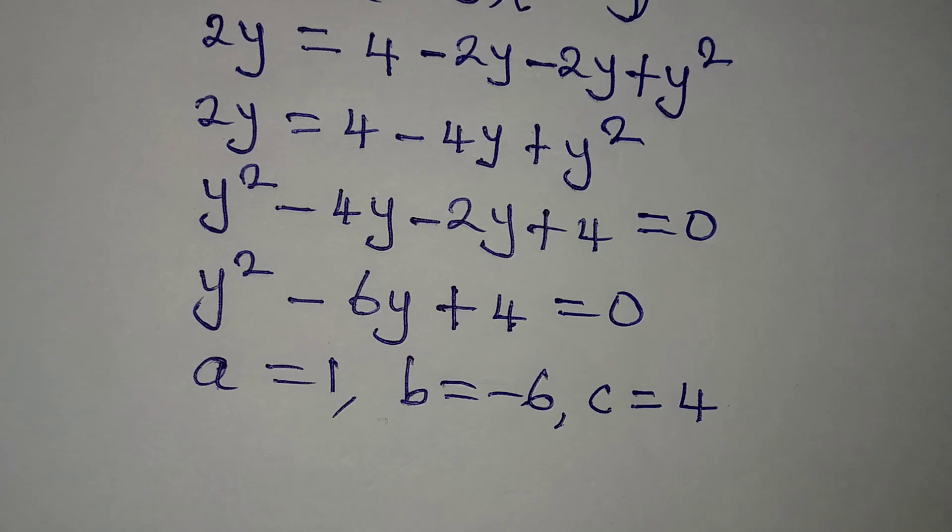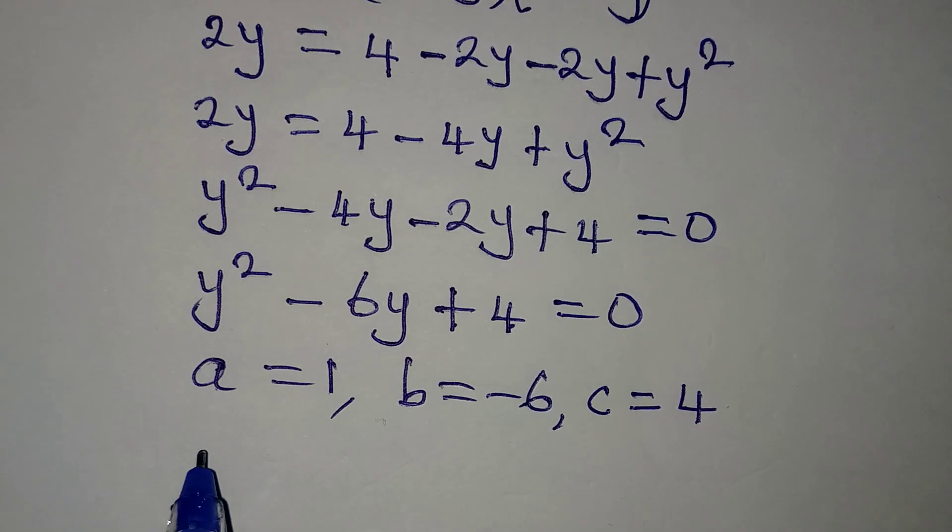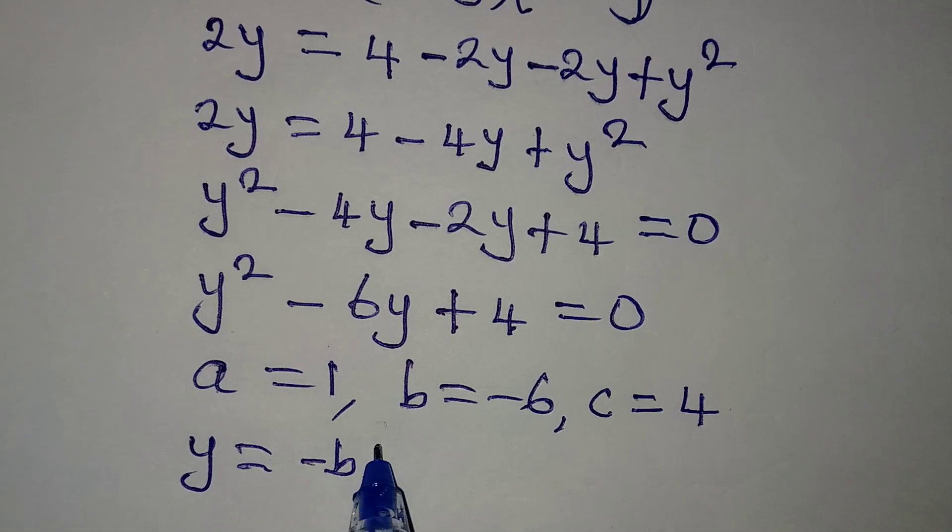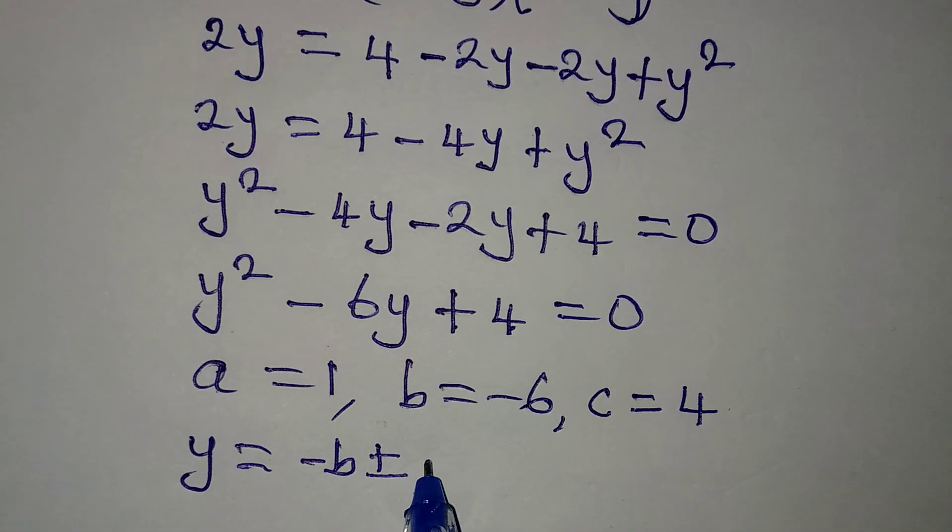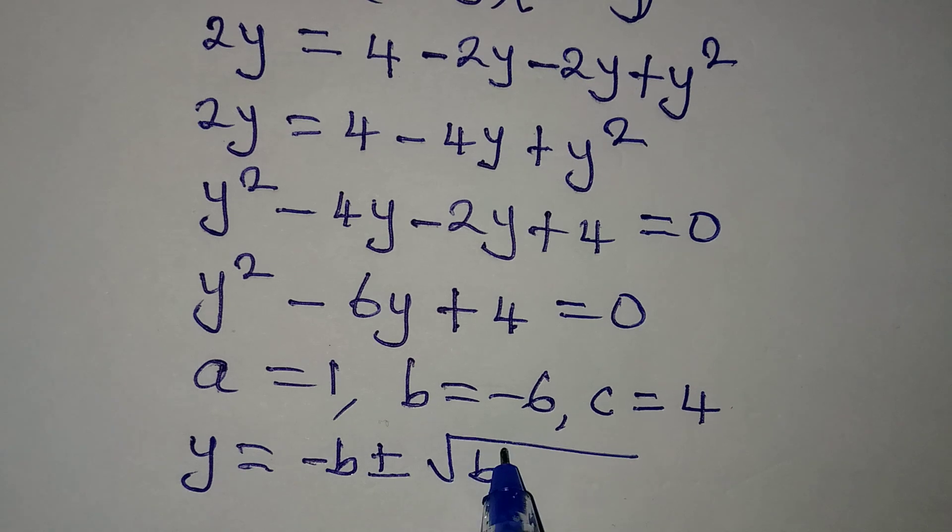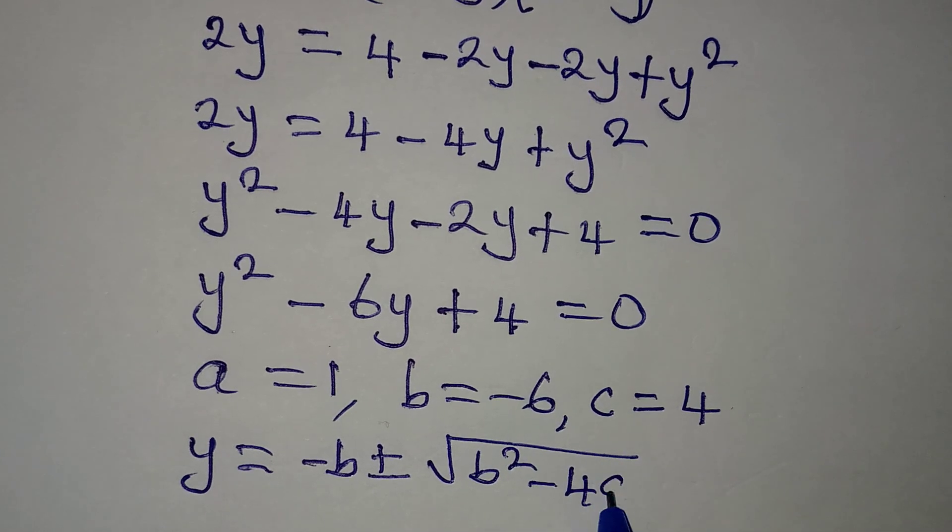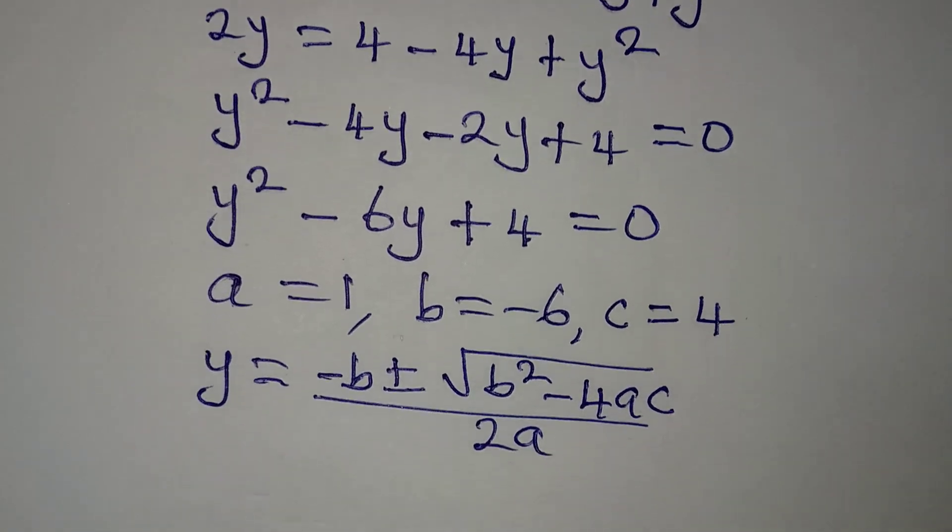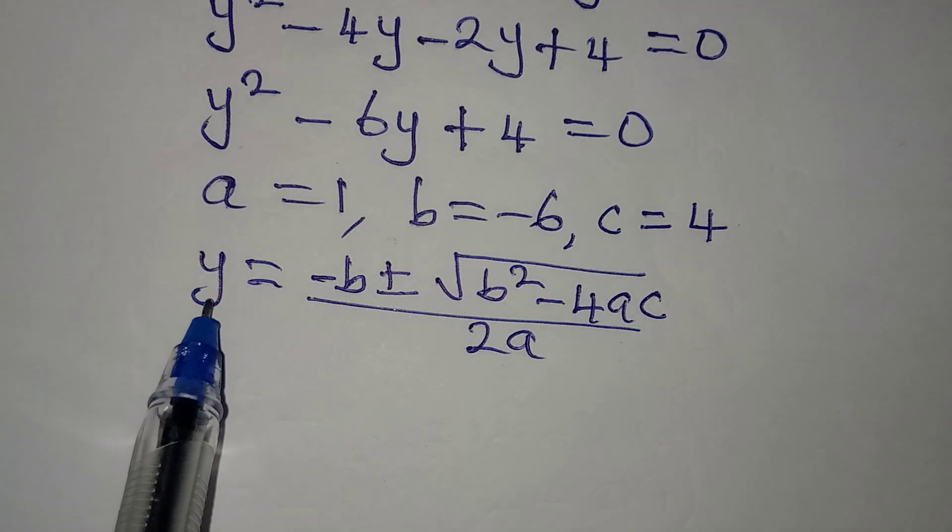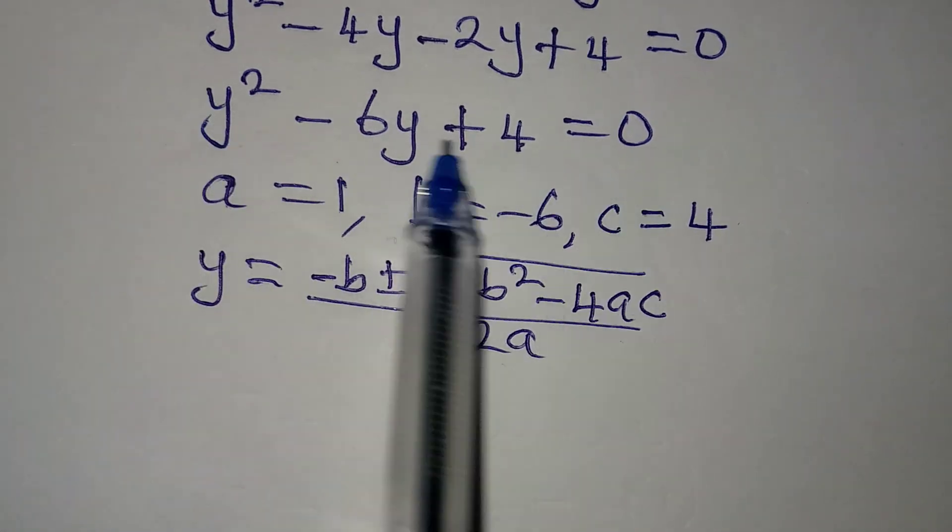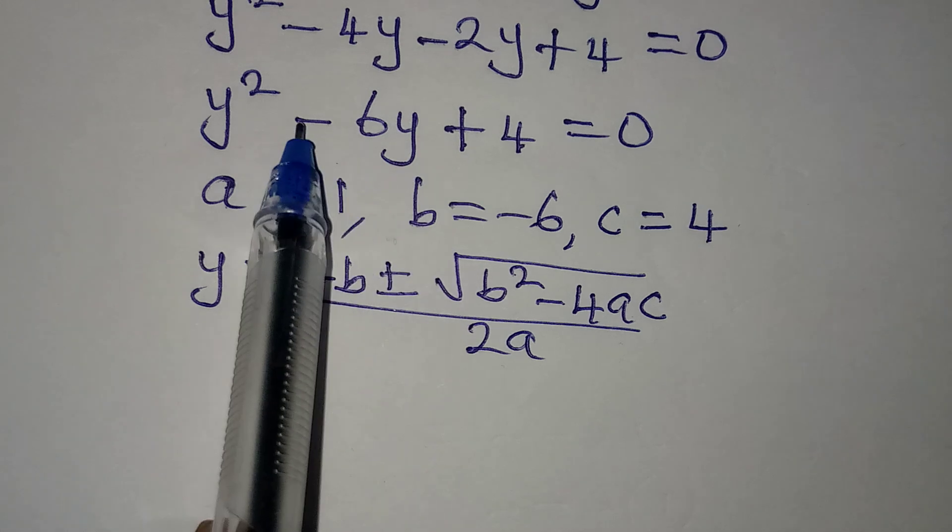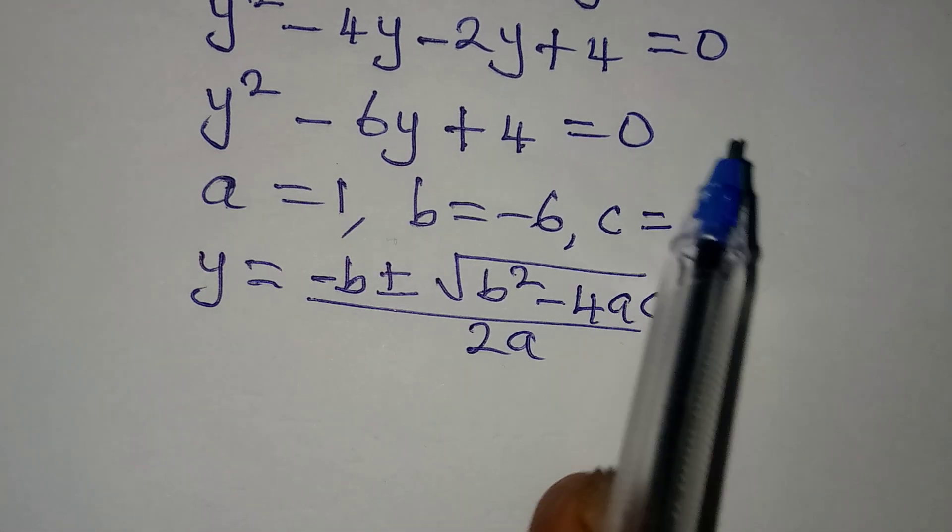Okay, so from here let's get the formula. y will be equal to -b ± √(b² - 4ac) all over 2a. Now the formula begins with y because y is the unknown variable in the equation. If it is x in the equation, then here would have been x.